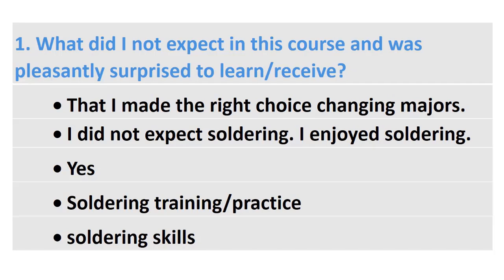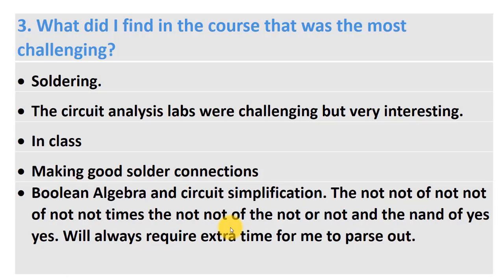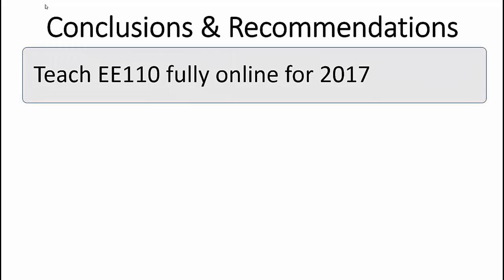General course comments: students were pleasantly surprised by and liked the soldering and assembly of equipment. They gained a decent grasp of electronics — learning binary, Boolean algebra — and a good understanding of electricity and electronics overall. The most challenging aspects were soldering, lab analysis, Boolean algebra, and simplifying circuits. What students felt they could improve going forward included soldering, calculating and measuring current, and staying on top of watching the videos — they found the interactive videos very good.